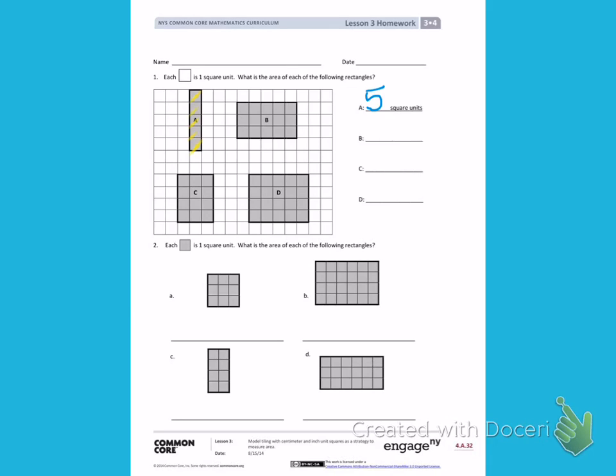Rectangle B. I have 1, 2, 3, 4, 5 squares across in each row. So I can count 5, 10, 15. The area of rectangle B is 15 square units.